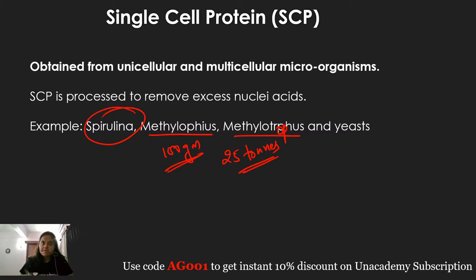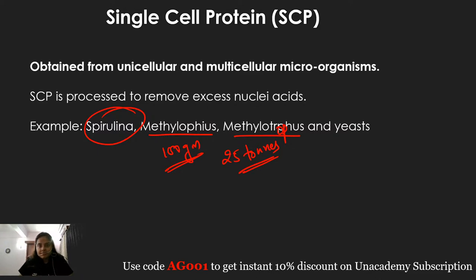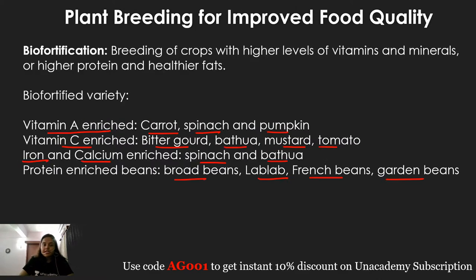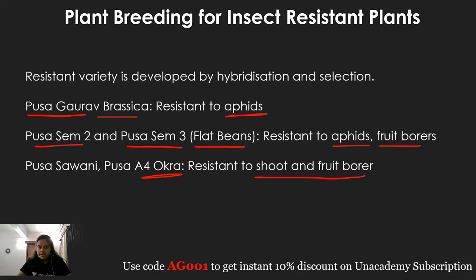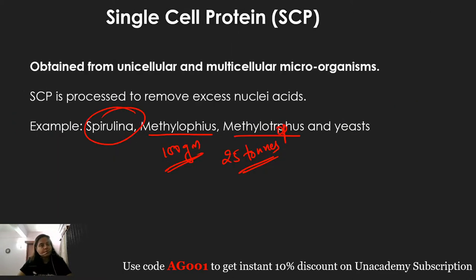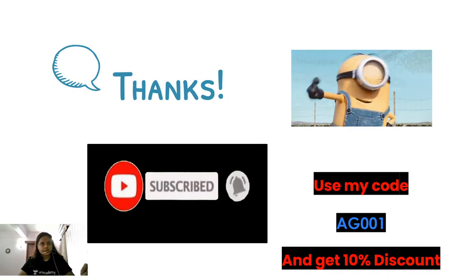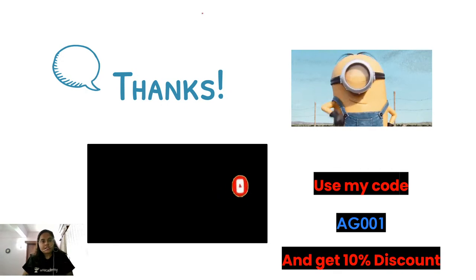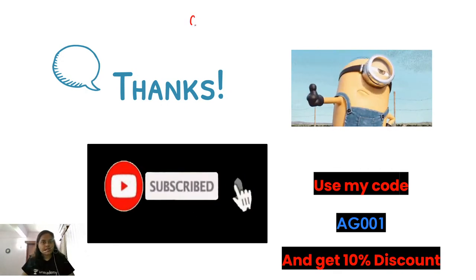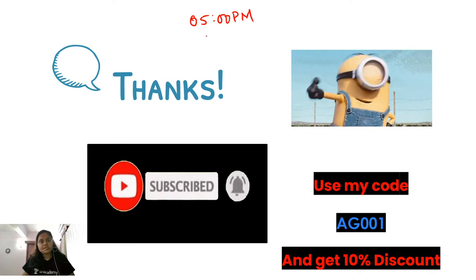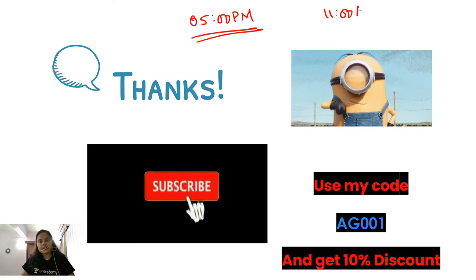Plant breeding and single cell protein is quite a simple portion. The tissue culture part will be covered in a supplementary class. Go through your NCERT, read each and every line, and relate everything taught today. This chapter is important for both board examinations and NEET examinations. I am live daily at 5 pm on Let's Crack NEET UG in English and daily at 11 am on Unacademy Learning App for special classes, which are absolutely free of cost.